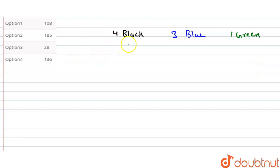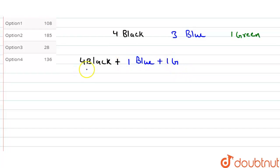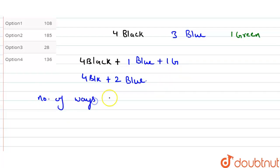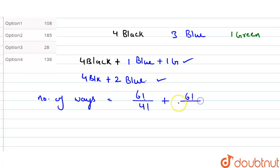We have the black flags — the option to use four black flags. If the first black flags are the same, then we have the same blue flags as one. Then we have the same green flag. So the number of ways will be equal to 6 factorial divided by 4 factorial, plus second case: 6 factorial divided by 4 factorial into 2 factorial.